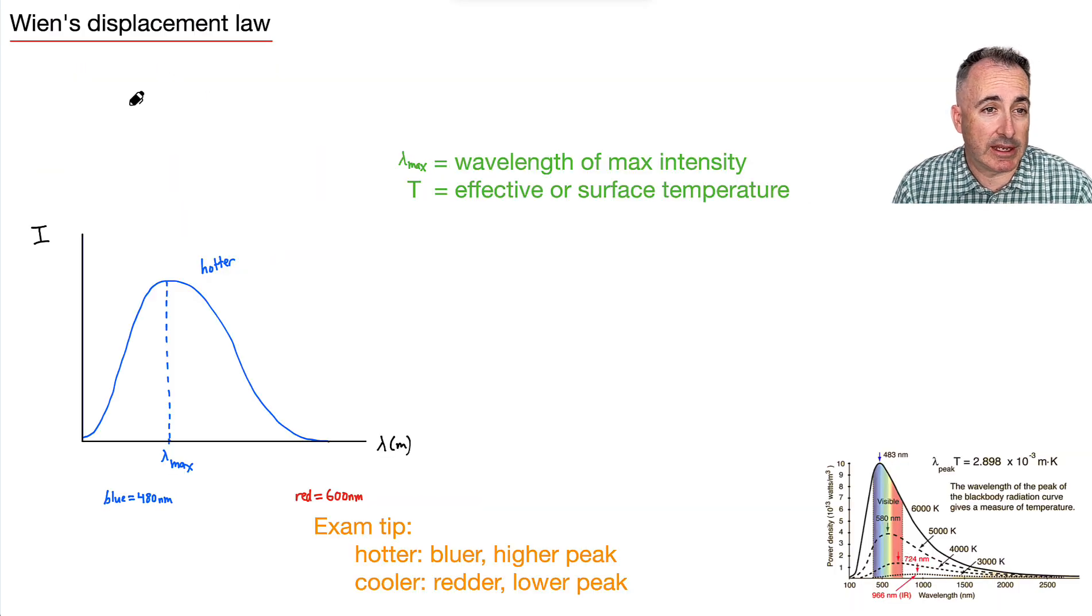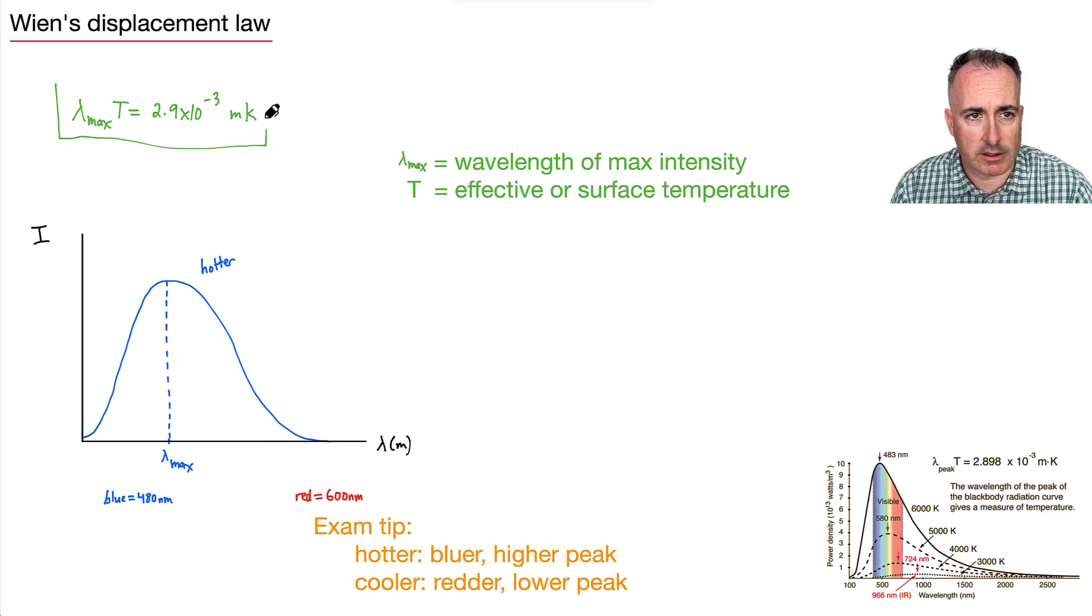So let's talk about Wien's displacement law. Maybe I'll start off by just writing the equation first. So it goes lambda max times t equals 2.9 times 10 to the minus 3, and then write mk like this. This is on your data booklet.